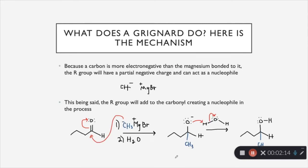So what does a Grignard do? Here's the mechanism. In the last slide, I talked about how because carbon is more electronegative than the magnesium bonded to it, the R group will have a partial negative charge, allowing it to act as a nucleophile. So with this being said, the R group will add to the carbonyl carbon right here. And in this process, it's going to push this double bond up to that oxygen, giving it a negative charge.